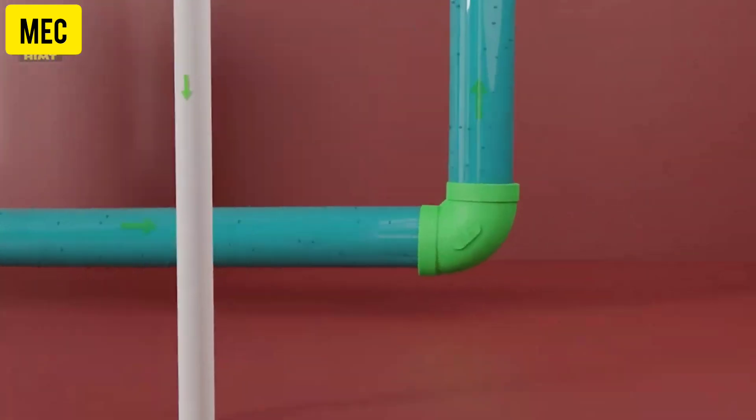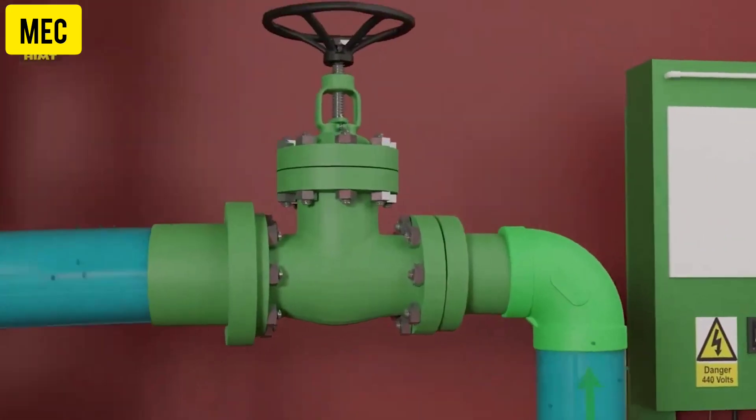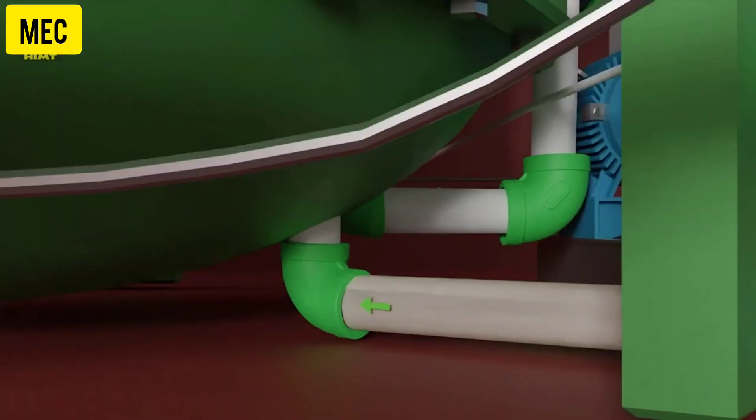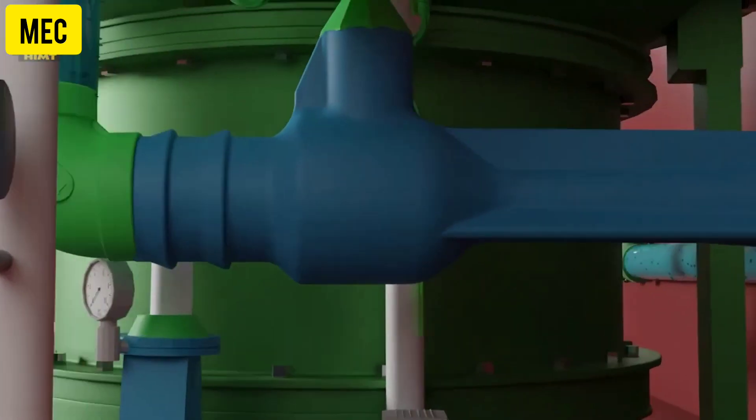Now note the ejector pump suction and discharge side pressures. And then open the seawater feed inlet valve to the evaporator. The seawater, as it flows through the ejector, sucks the air and the brine from the shell due to Bernoulli's principle.